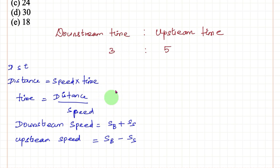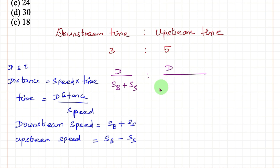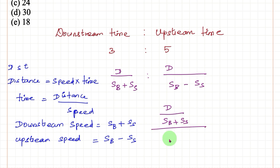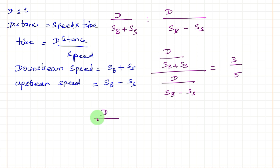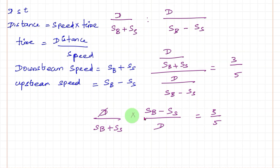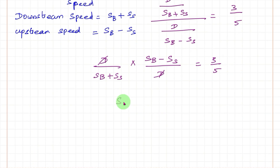Time equals distance by speed. So, taking distance as D, downstream time is D divided by (SB plus SS), and upstream time is D divided by (SB minus SS). Setting up the ratio: D/(SB plus SS) divided by D/(SB minus SS) equals 3 by 5. When dividing, it becomes inverse, so (SB minus SS) divided by (SB plus SS) equals 3 by 5, and D gets cancelled.